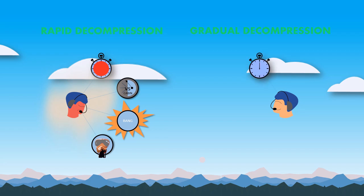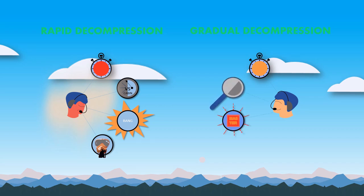A gradual decompression is a slow loss of cabin pressure which occurs over a long period of time. It is difficult to identify before cabin altitude sensors give a warning. This occurs due to a small leak in the pressurized sections of the fuselage, a malfunction in the outflow valve, or a reduction in the cabin air inflow due to equipment malfunction.